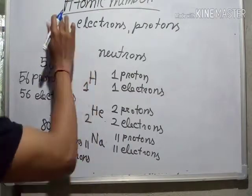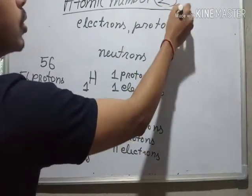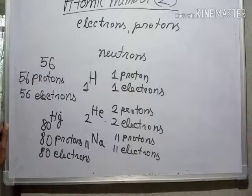Thus, atomic number, which is generally denoted by capital Z, gives you the number of protons or electrons which are present in a definite element.